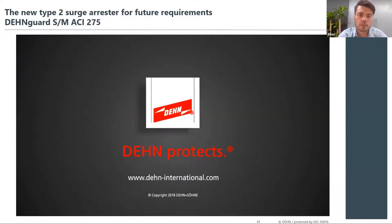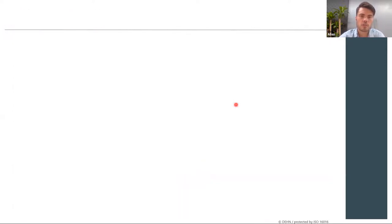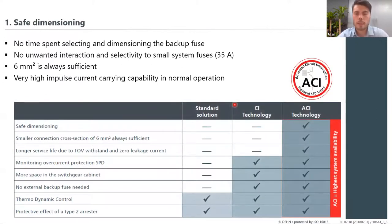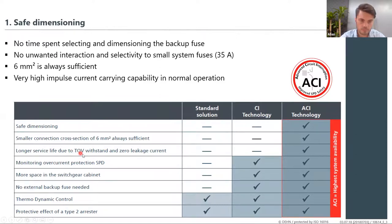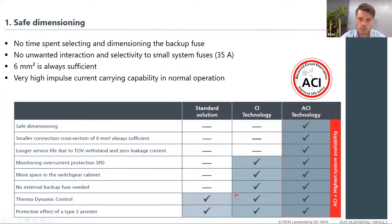To summarize ACI features: safe dimensioning — 6 mm² cables are always sufficient, independent of the upstream circuit breaker size. Longer MOV lifetime and higher withstand voltages. Overcurrent protection disconnects the SPD in overstressed conditions. More space in switchgear cabinets since no backup fuses are needed. And it provides Type 2 protection.